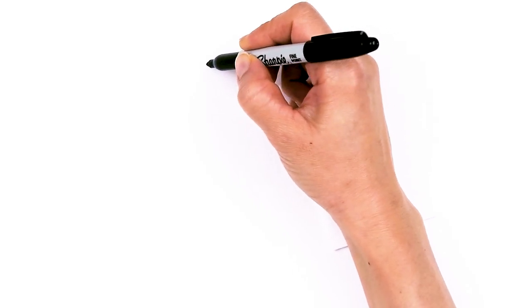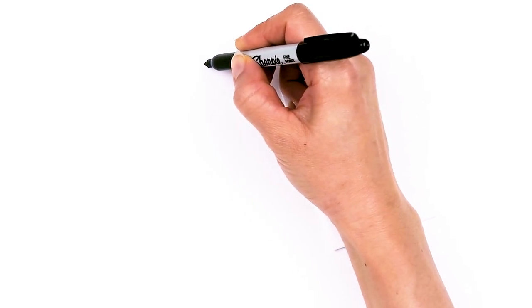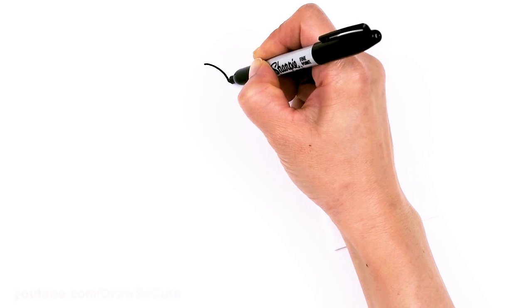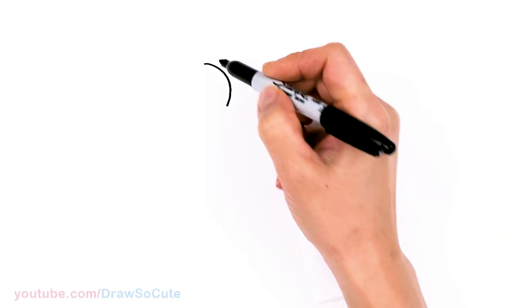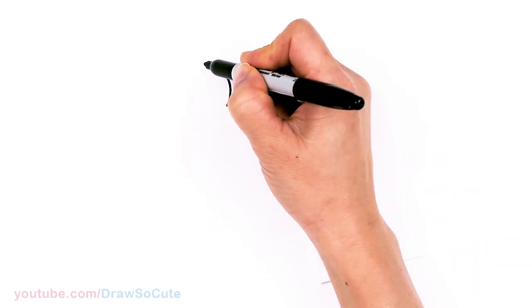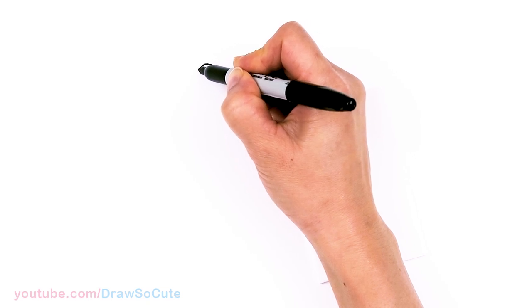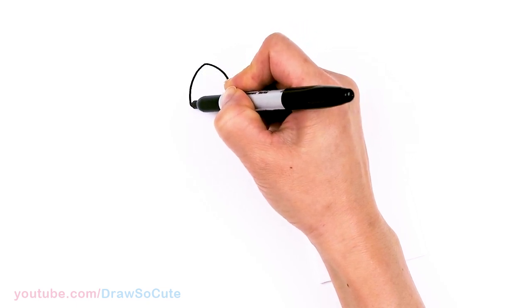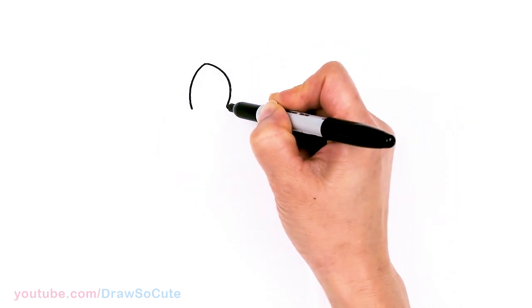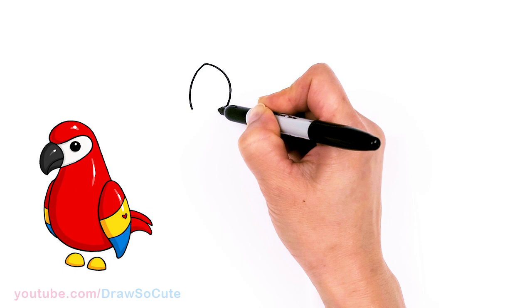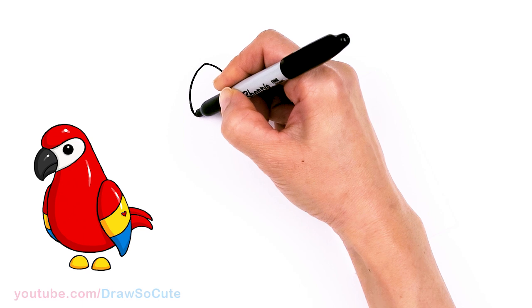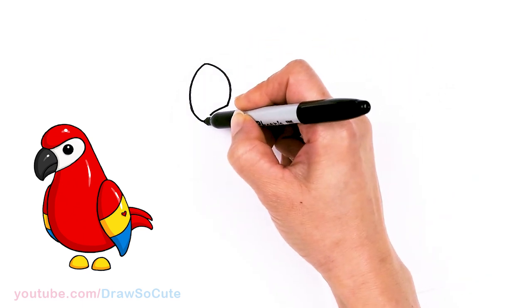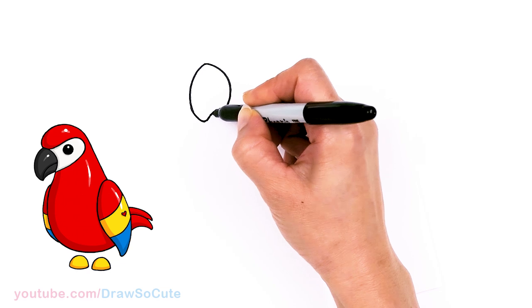To draw this pet parrot, let's first start by drawing its beak. I'm gonna come right here and draw a big curve — a nice round curve — and bring it down right there. Then we're gonna start to bring it down to draw the beak. So right here where you start it, bring it down, curving it, and then come back to where you ended and curve it to connect. Let's go ahead and connect this at a point at the bottom right here.